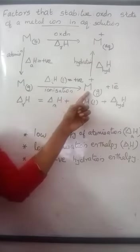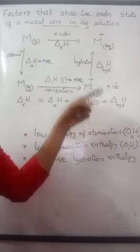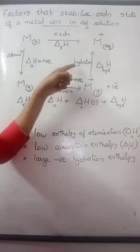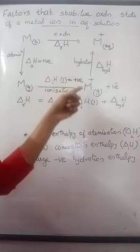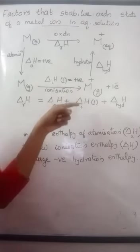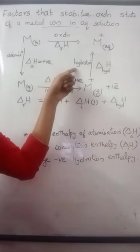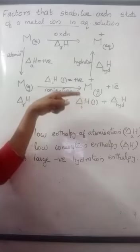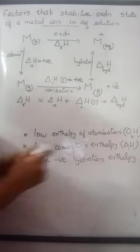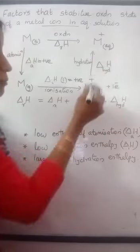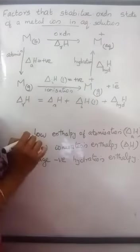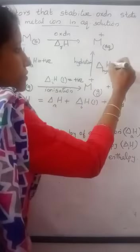Now, when the metal ions in the gaseous state are produced in water, they undergo solvation or hydration. A number of water molecules will surround this metal ion and stabilize it. That process is called hydration. During hydration, a certain amount of energy will be released, meaning hydration is an exothermic reaction. The amount of energy released during hydration is called hydration enthalpy, which will be negative.